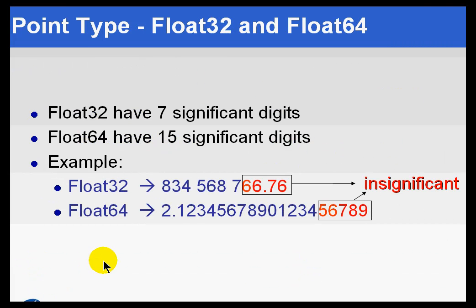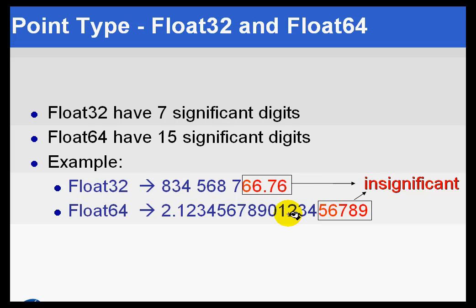We also have the choice between Float 32 and Float 64, and it really has to do with how much precision you need. Float 32 is going to be a single precision real with up to seven significant digits, so we're going to end up having fewer significant digits to display than if you were doing that same thing as a Float 64.